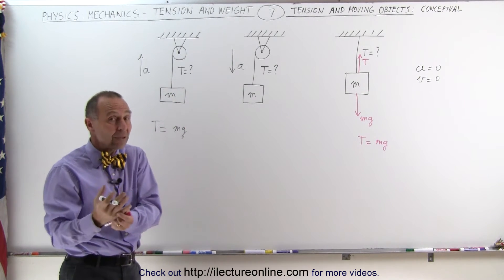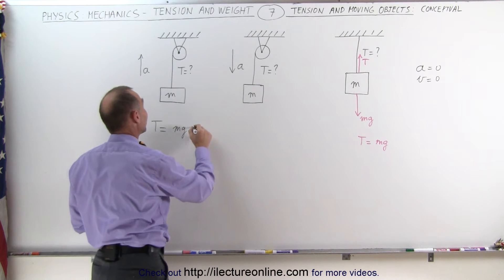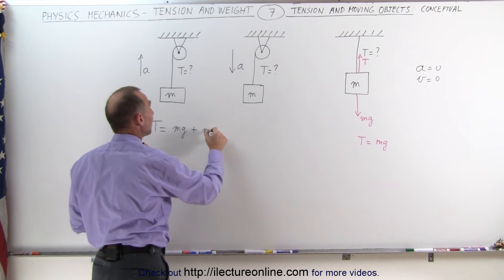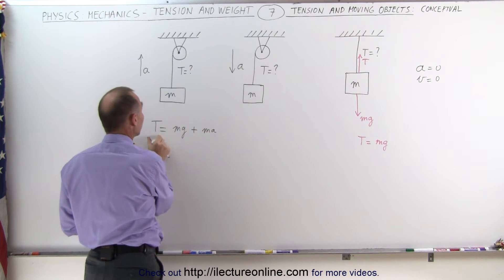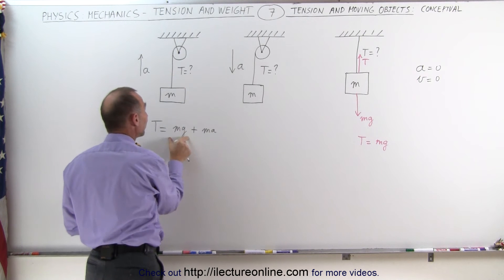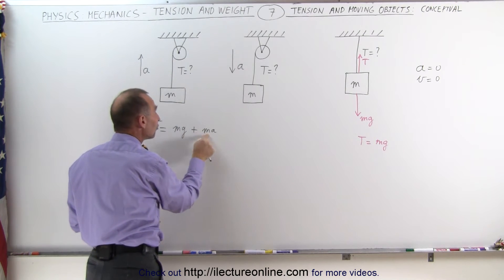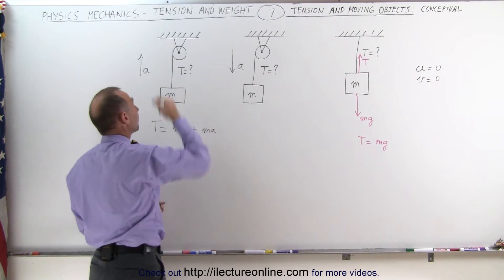And since we know that F equals MA, it makes a lot of sense that the additional force simply would be the mass times acceleration. So the tension in the string will be equal to the weight of the object plus the additional force required to accelerate it upward.